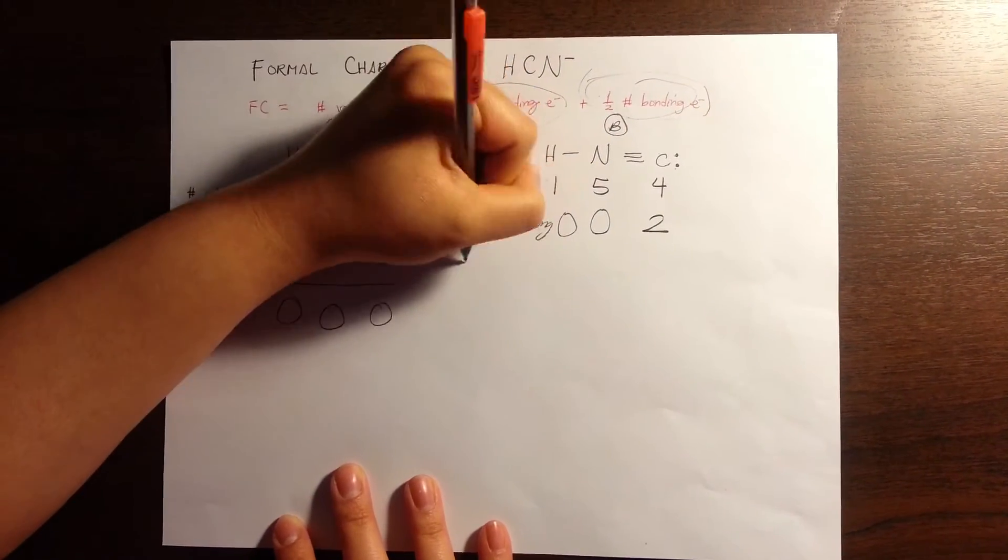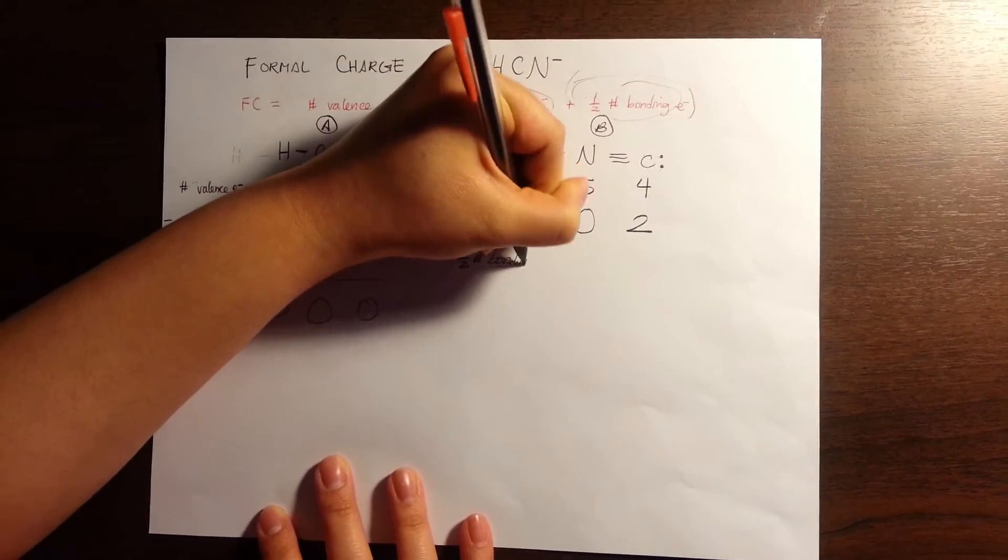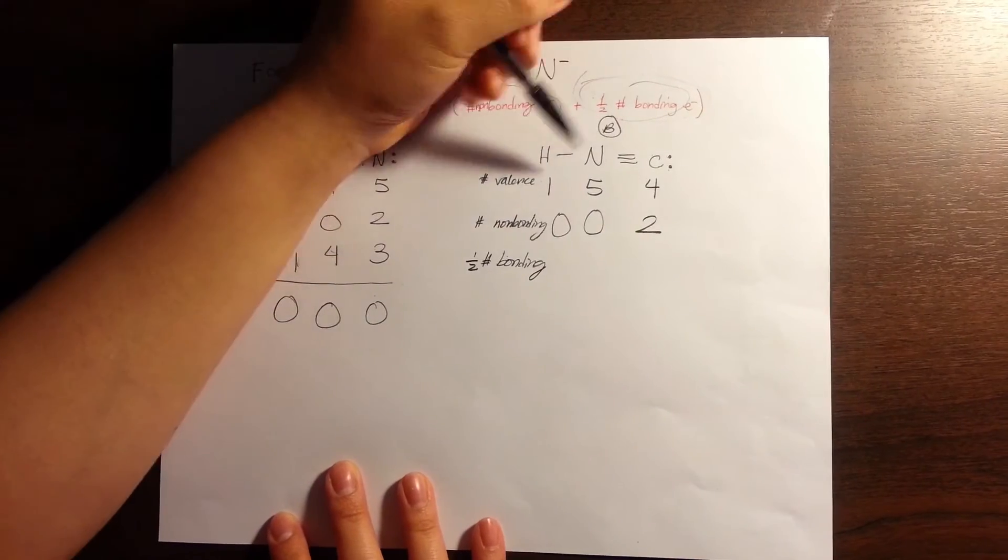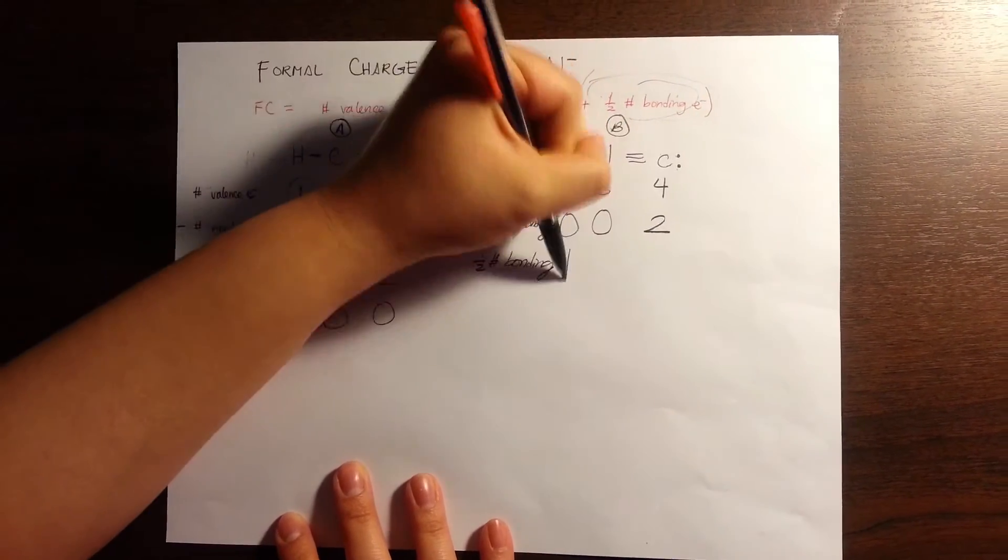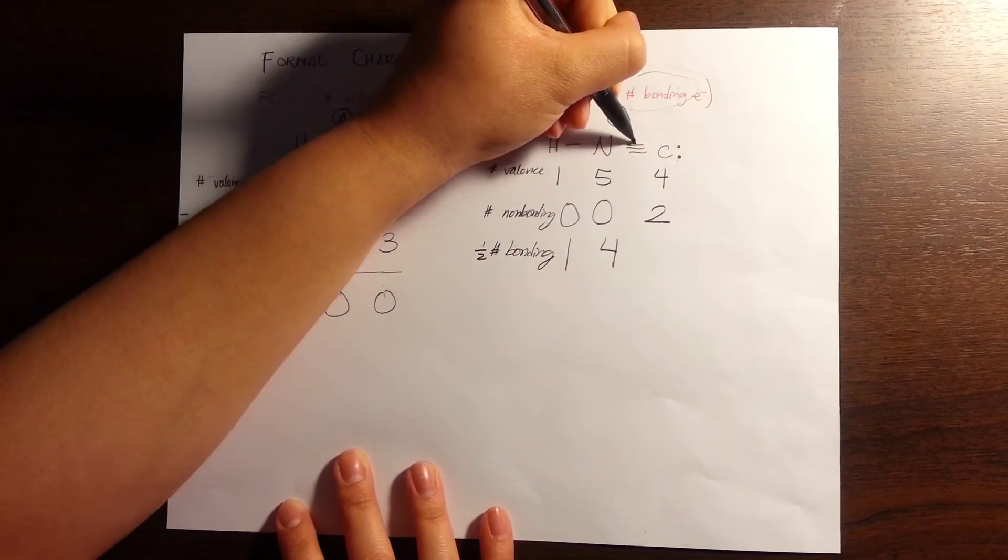And then we have one-half of the number of bonding electrons, which are the lines in our Lewis structure. So hydrogen has one, nitrogen has four, and carbon has three.